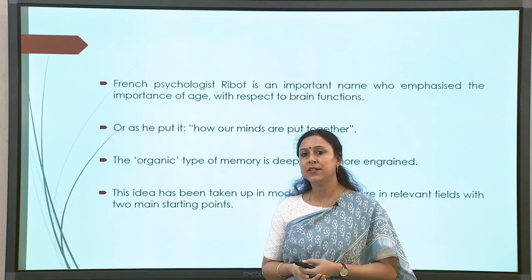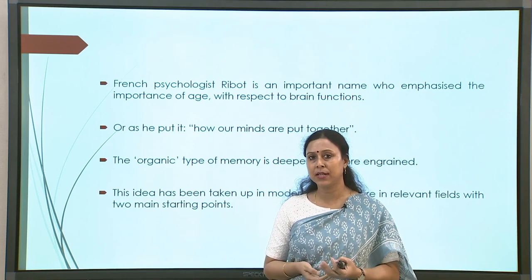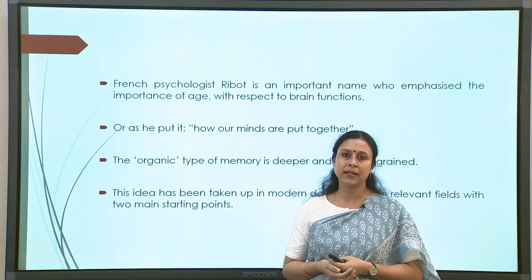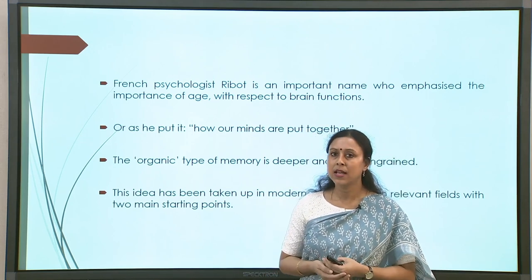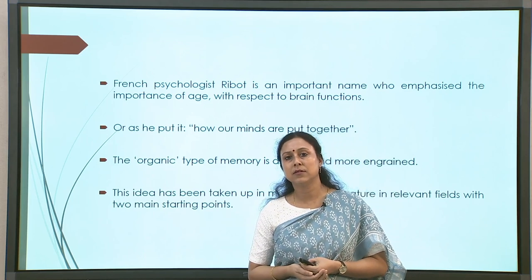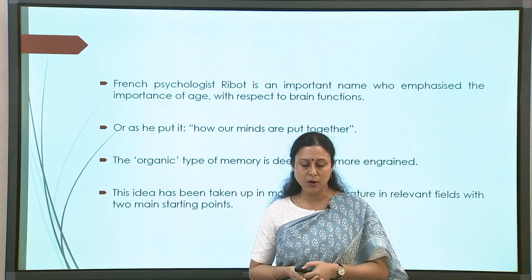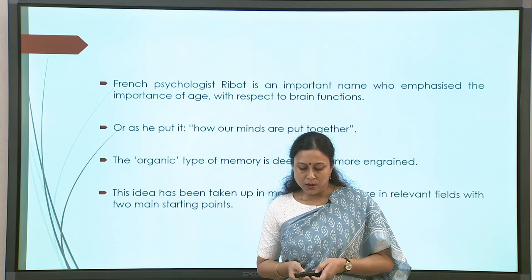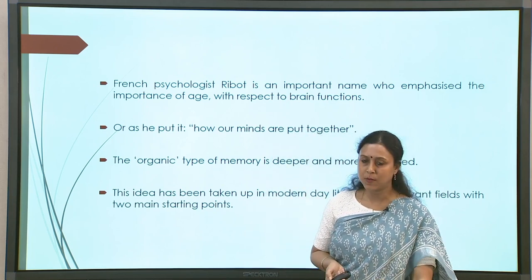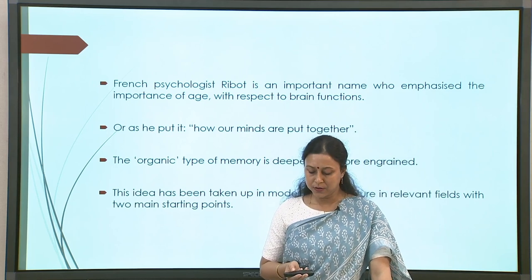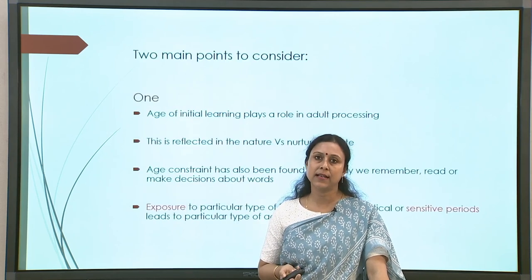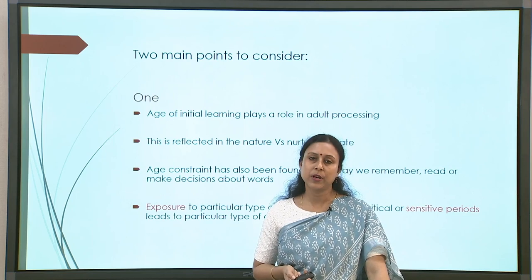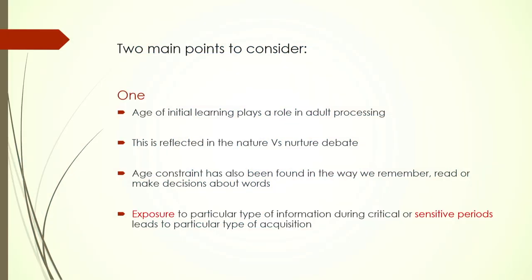The first part of life's journey is when brain development happens very quickly. The dramatic changes that happen at that time, and the memories connected during that time, are what Ribot calls organic memory. This idea has been taken up in modern literature to see if it points to the same aspect he described. There are basically two things to keep in mind when we take Ribot's rule to understand language lateralization in the bilingual brain.